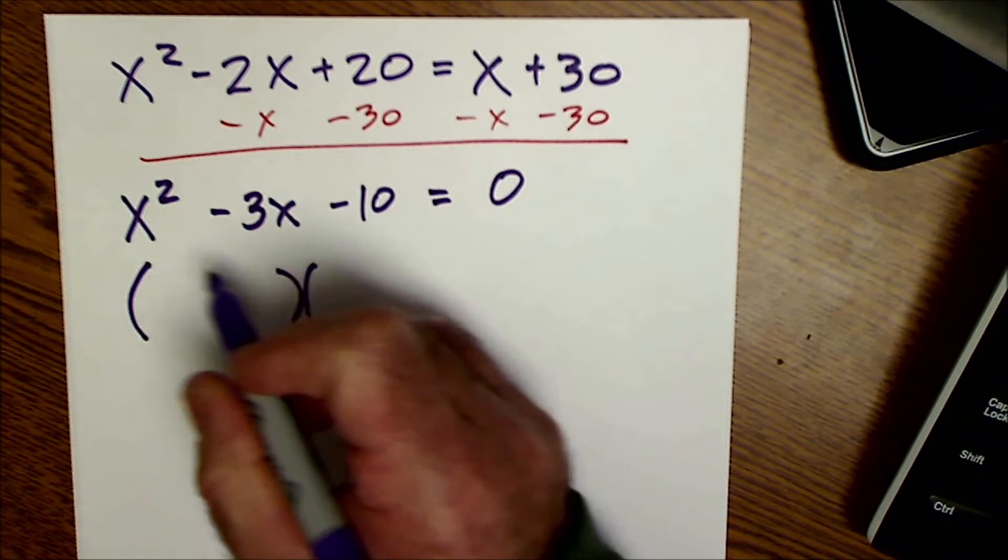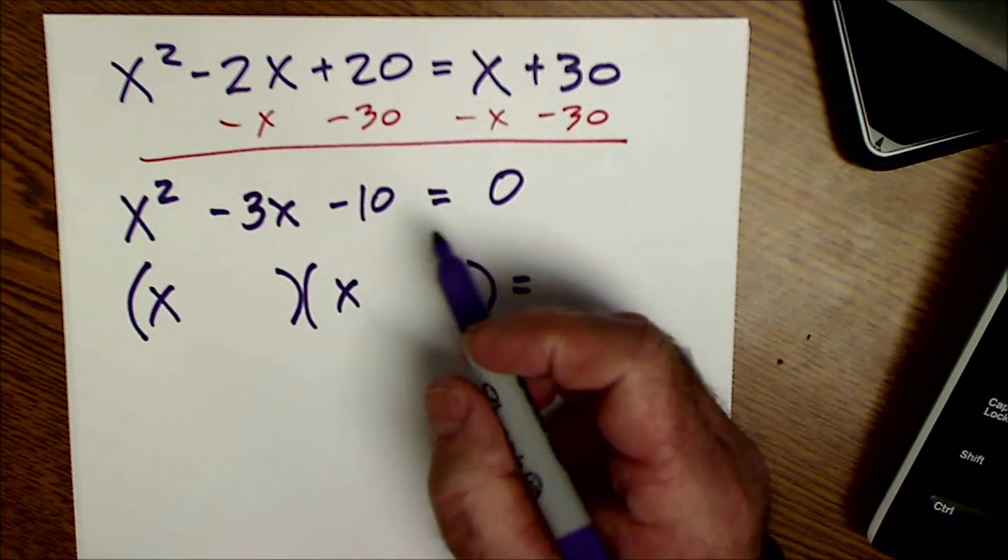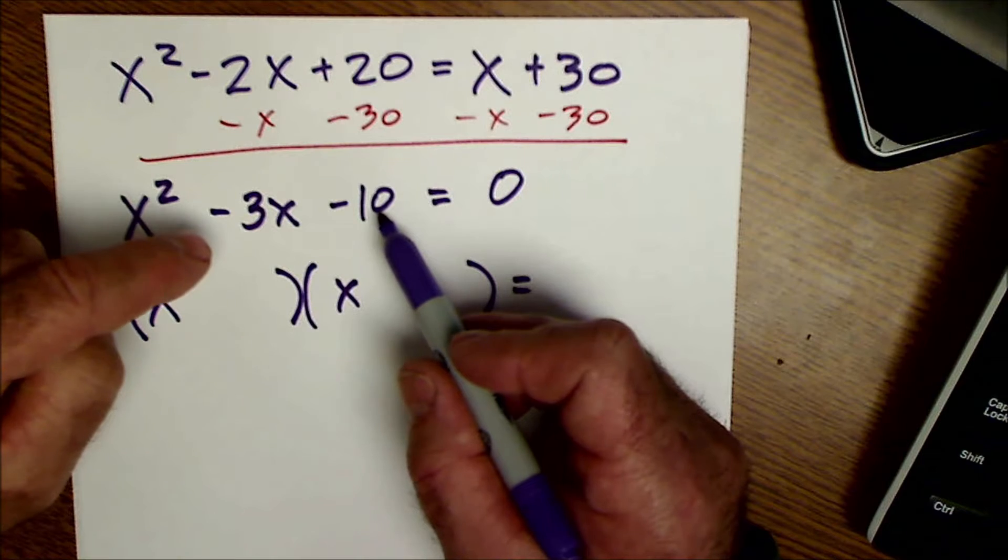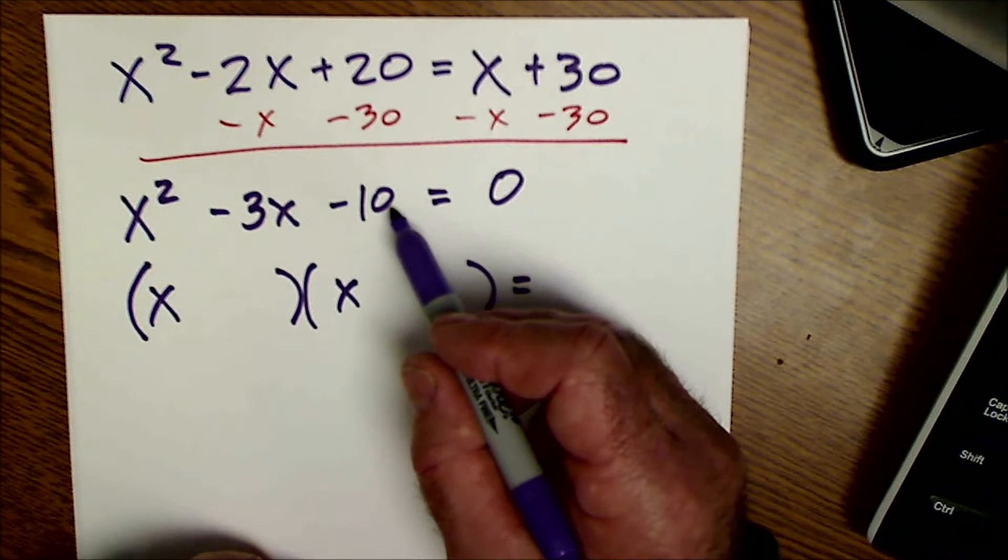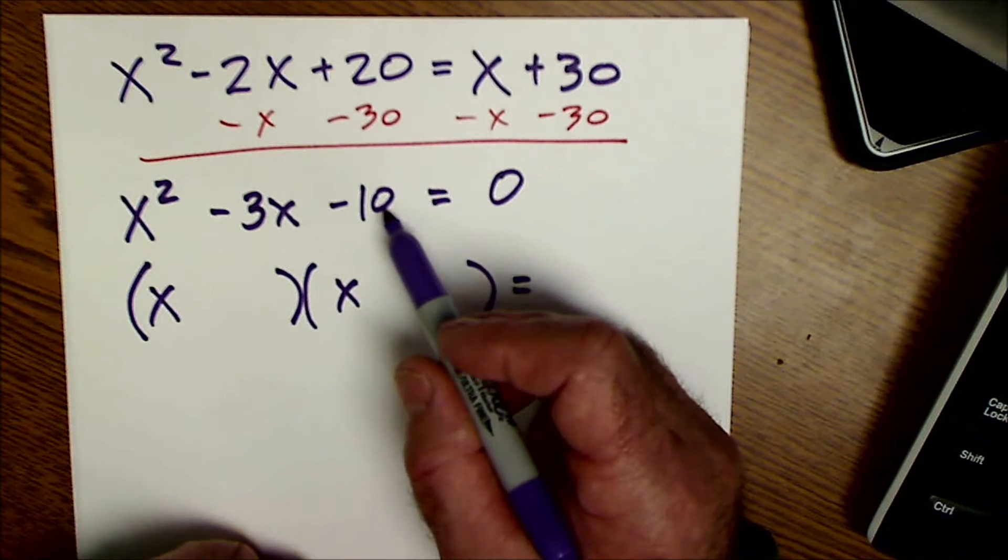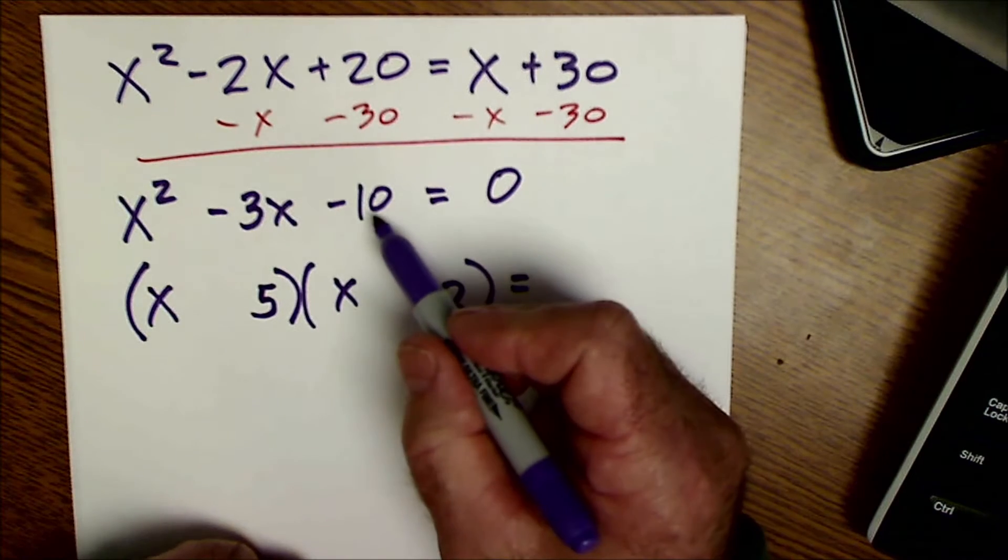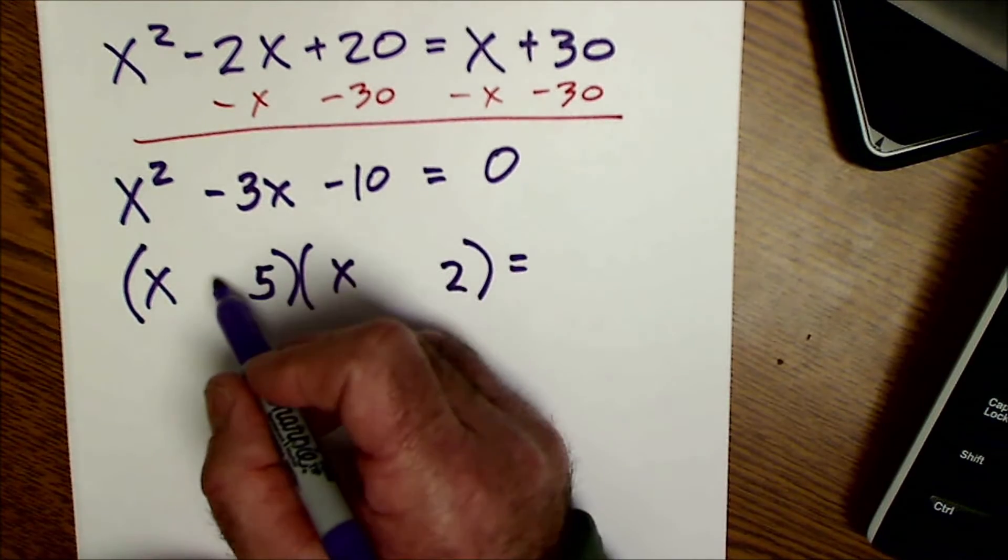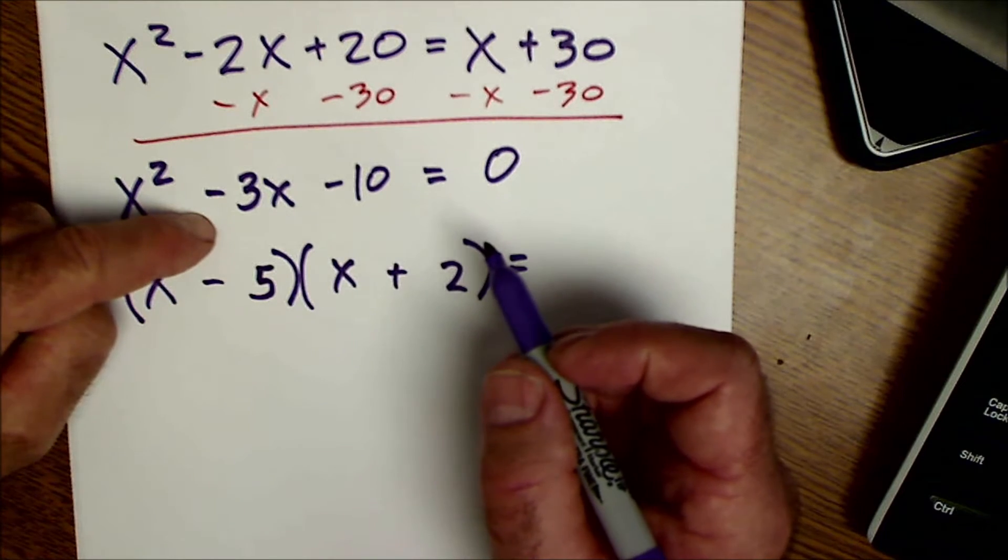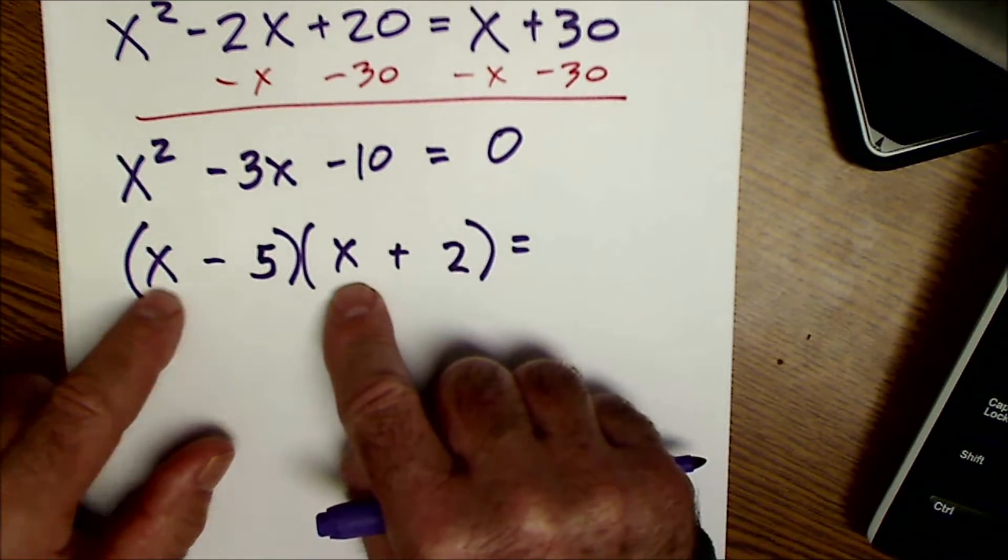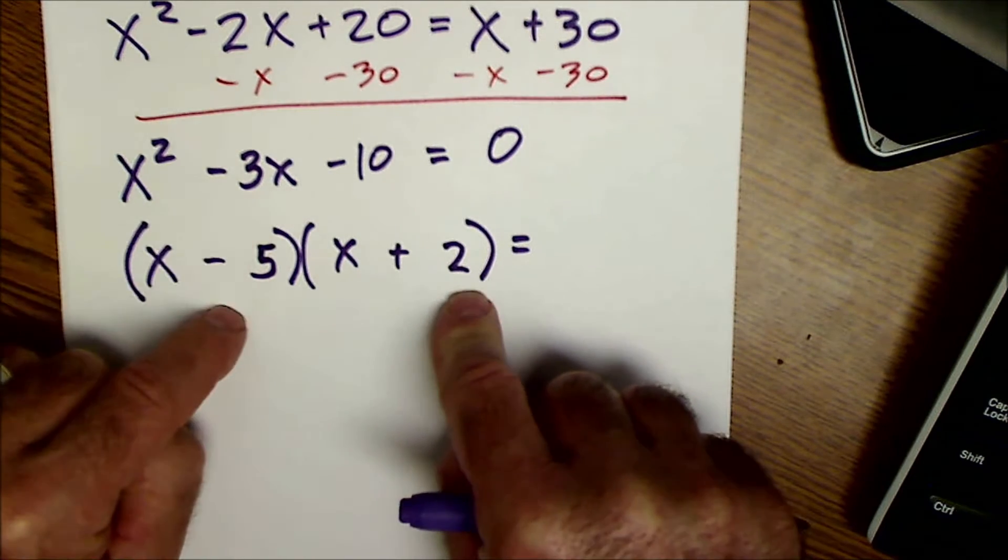Now that I have the whole thing set equal to zero, I'm going to factor it. The only factors of x squared are x and an x. The factors of 10 could either be a 10 and a 1 to get a 10, but then I'm not going to add up to give me a 3, or a 5 and a 2, where they'll multiply together to give me a 10, and add together to give me a 3. One has to be negative, one positive to give me a negative 10. The larger one's going to be negative, the smaller one positive to give me a negative 3x. The check is x squared minus 5x plus 2x negative 3x minus 10.